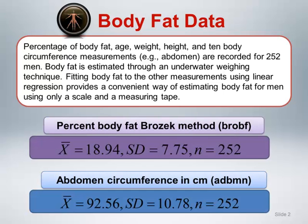Examining the descriptive statistics for the 252 men, we see that the mean of the Y or dependent variable, percentage body fat, as calculated by the Brozek method, is 18.94%. The mean of the X or independent variable, abdomen circumference, is 92.56 centimeters.